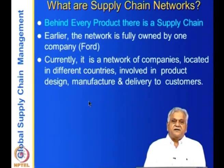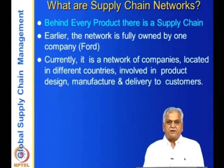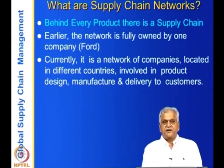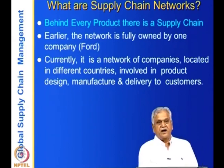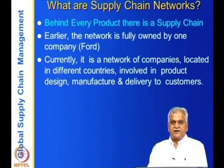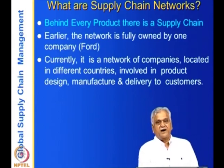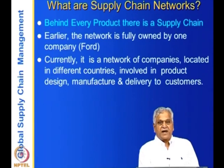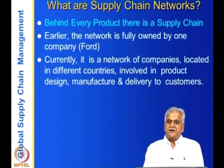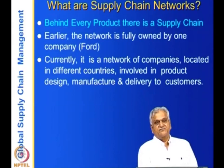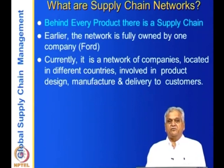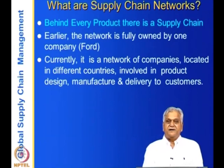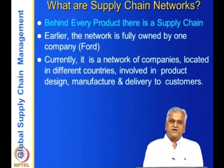Earlier, the network was fully owned by one company. For example, Ford in 1913 used to own the iron ores, the ships to carry iron ore to the shores, the steel plants, the assembly plants — all of it, right until the car went to the dealer. Ford owned everything.